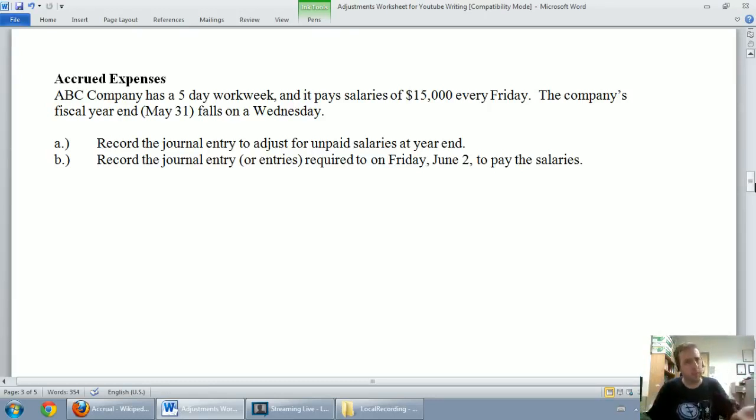Here's an example of an accrued expense. ABC company has a five-day workweek and it pays salaries of $15,000 every Friday. The company's fiscal year end falls on a Wednesday on May 31st. Record the journal entry to adjust for unpaid salaries at year end. So we're gonna do a journal entry on May 31st. We've got salaries that's an expense that's built up over time but we haven't paid it yet.